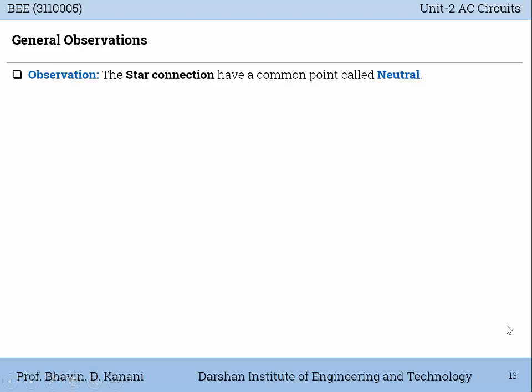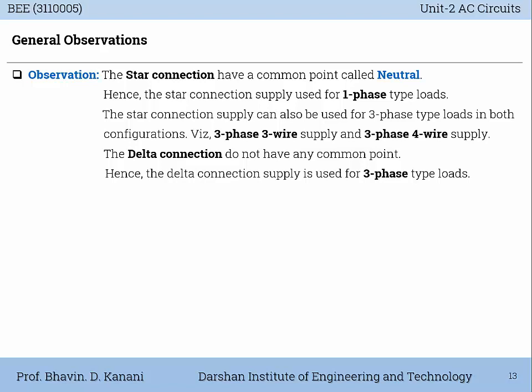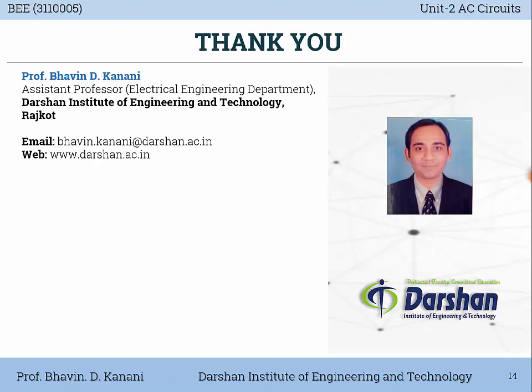General observations: the star connection has a common point called neutral. Hence, star connection supply can be used for single-phase type loads. The star connection can also be used for three-phase loads in both configurations — three-phase three-wire supply without neutral, and three-phase four-wire supply with neutral. The delta connection does not have any common point, hence delta connection supply is used for three-phase type loads only.